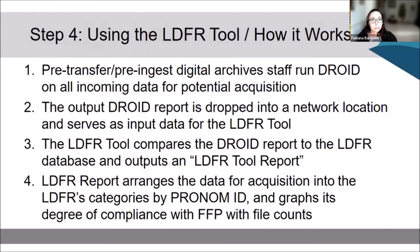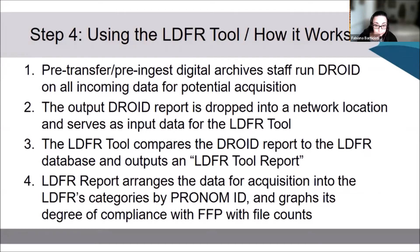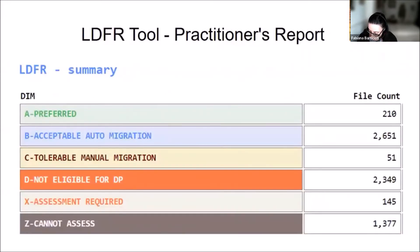So how does this tool work? At the point of pre-transfer pre-ingest, digital archive staff would run DROID on all incoming data for potential acquisition. This DROID output report would be dropped into a network location. The LDFR tool, which is a script in PowerShell—credit to Maxim Champagne for building this fabulous tool—then compares the DROID report to the LDFR database and outputs a new report. This new report then speaks to how compliant the dataset is against all of these categories in our LDFR by PRONOM ID. In the interest of time, this will be just a quick couple of screenshots, but actual reports are available if interested.